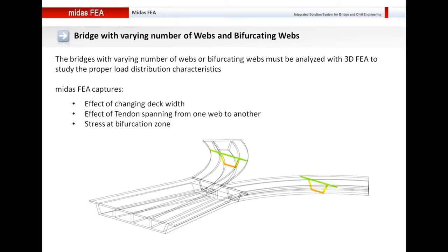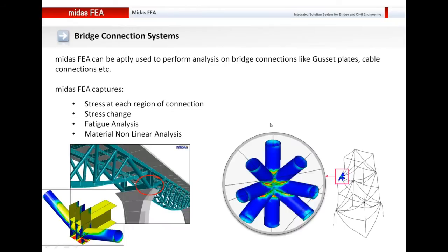Basically, for these projects — the first being a curved bridge and the second a bridge with bifurcating branches — you can use Midas FEA. For bridge connection elements, if you want to design or analyze them, Midas FEA can be of good use. Here in this truss bridge, I have modeled the connection element in Midas FEA and performed stress analysis as well as fatigue analysis on it so that I can easily design it.